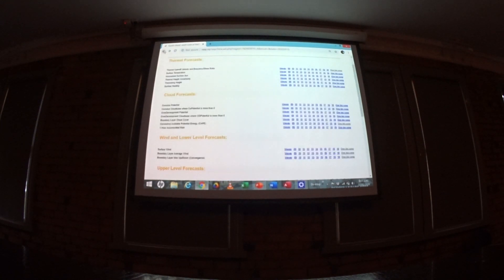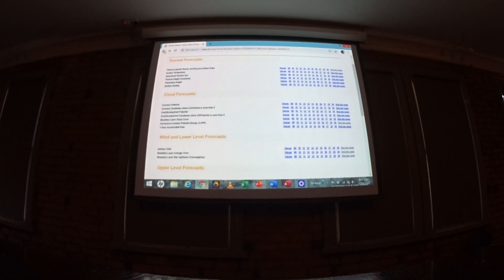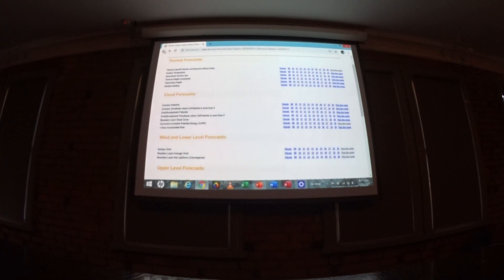Like I said earlier, about going through all these different information sources - I used to go through surface temperature, thermal height uncertainty, surface heat, boundary layer cloud cover, like every single thing. I was spending ages going through all the different blip maps.